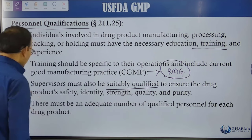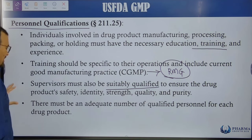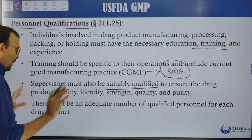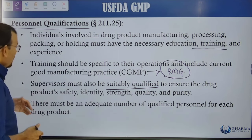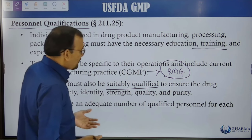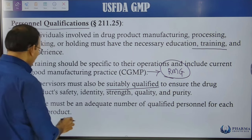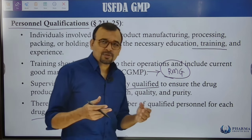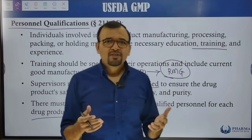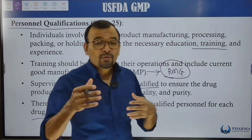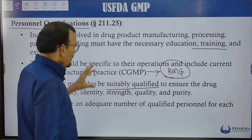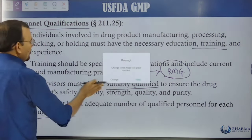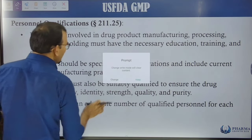Supervisors must also be suitably qualified to ensure the drug product's safety, identity, strength, quality, and purity are appropriately maintained. There must be an adequate number of qualified personnel — operators, supervisors, and managers — calculated and available to run your manufacturing unit effectively.